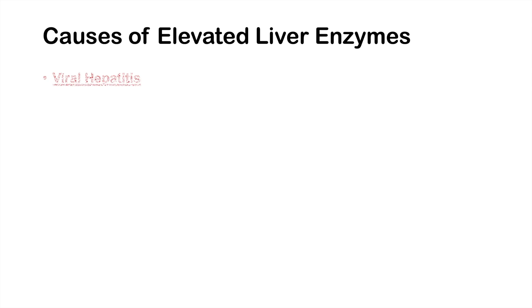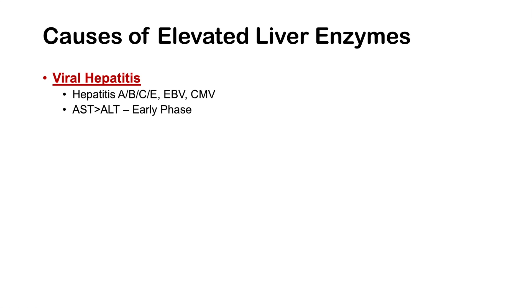One cause of elevated liver enzymes is viral hepatitis — viruses like hepatitis A, B, C, and E, as well as EBV (Epstein-Barr virus) and CMV (cytomegalovirus). In the early phase of viral hepatitis, AST is higher than ALT. But because AST has a shorter half-life, it degrades faster, and over time ALT becomes higher than AST. This helps us determine whether it's an early or late phase of injury.